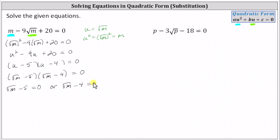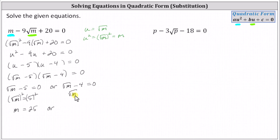Now we solve these square root equations for m. For the first equation, we add five to both sides, giving us the square root of m equals five. To solve for m and undo the square root, we square both sides, giving us m equals 25. Or for the second equation, we add four to both sides, giving us the square root of m equals four. Square both sides to solve for m, and we have m equals 16.